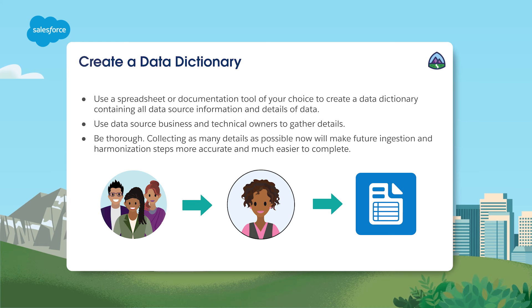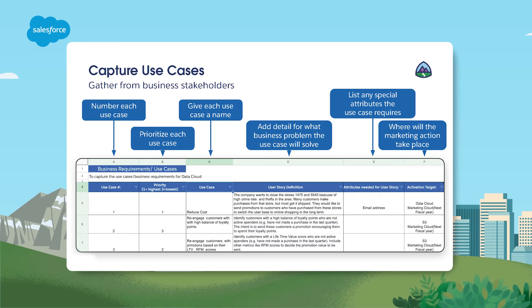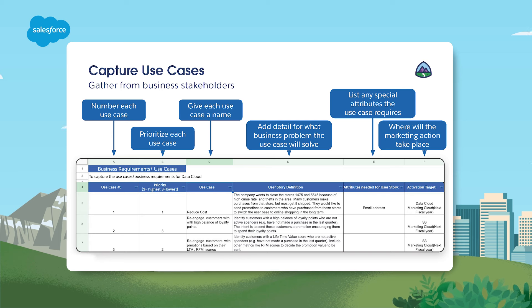Be as thorough as you possibly can. Collecting as many details as possible now will make future ingestion and harmonization steps more accurate and much easier to complete. You want to gather use cases from your business stakeholders and capture them in the data dictionary. Name and number each use case, ranking its priority. Detail what business problem it solves, list any required attributes, and note where the marketing action takes place.